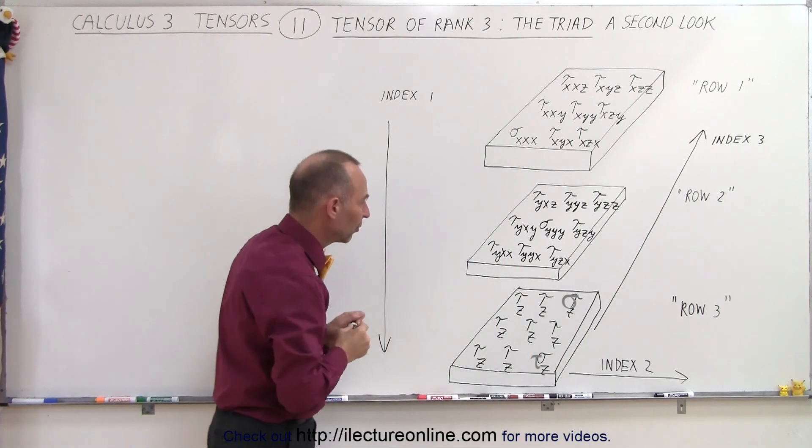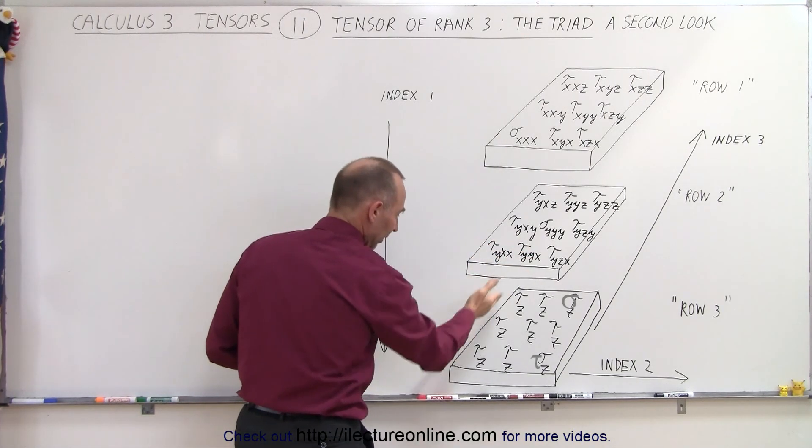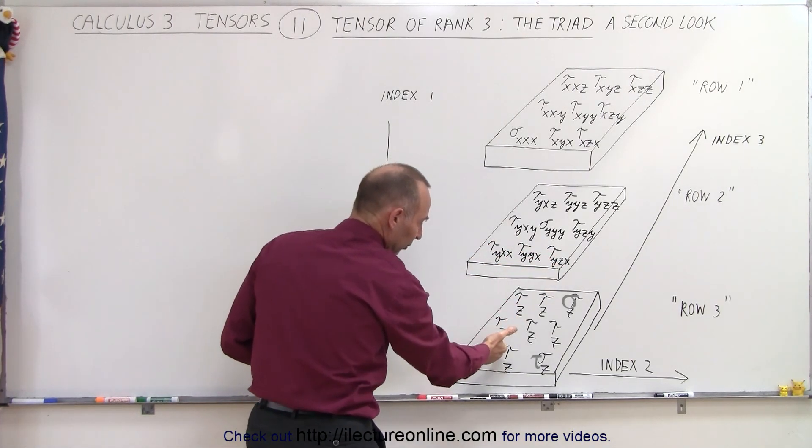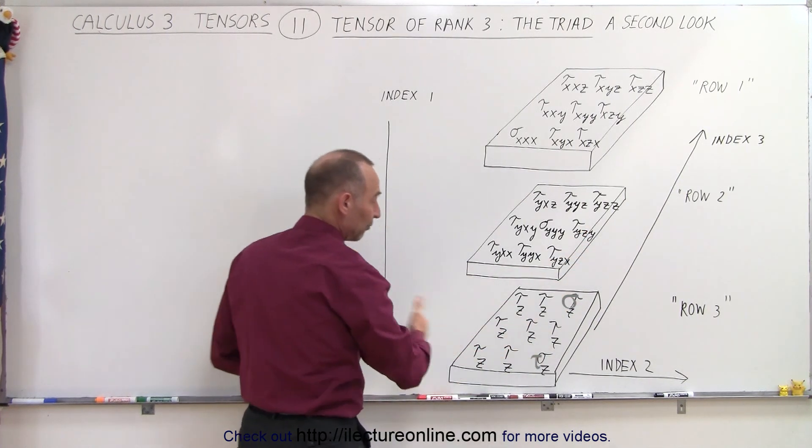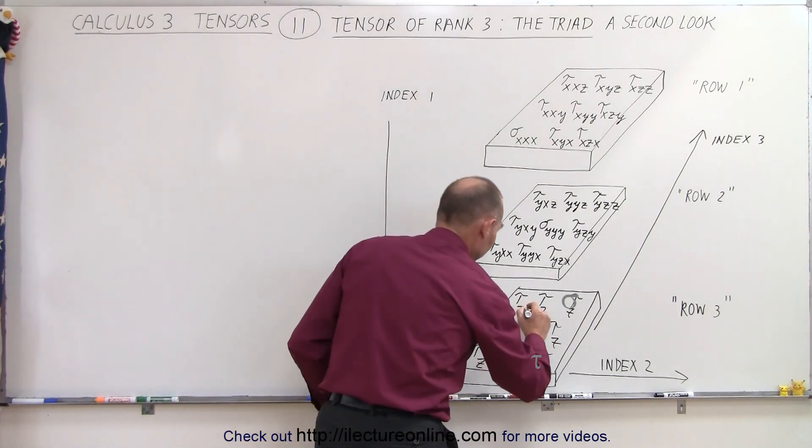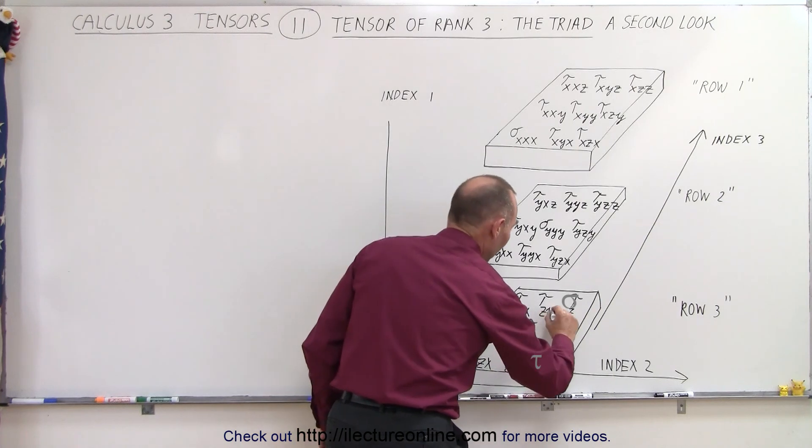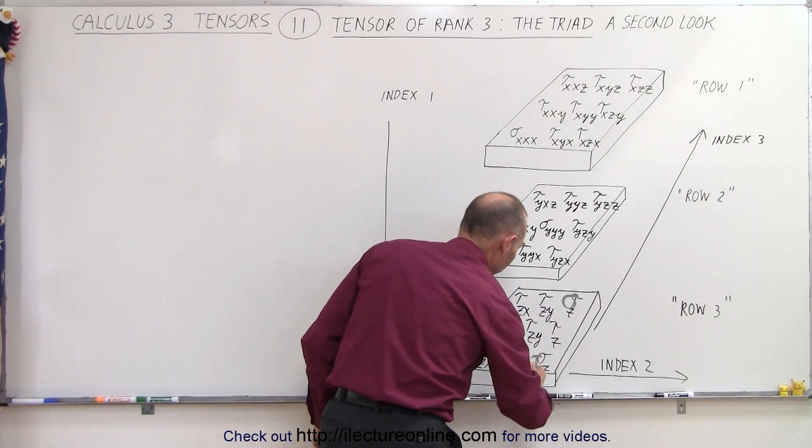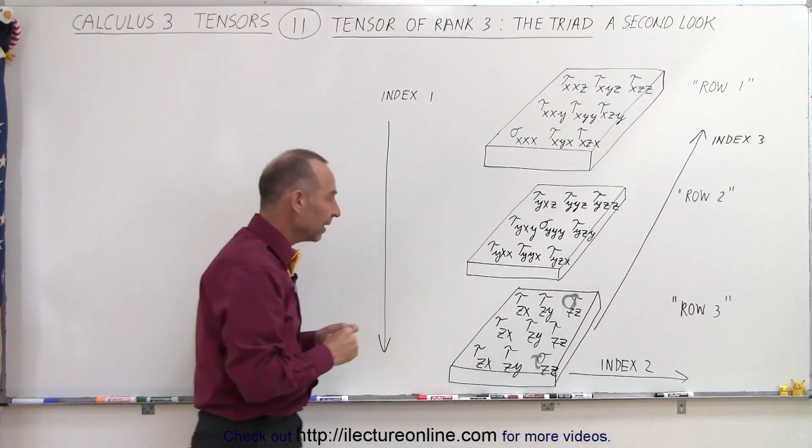Now for the second index, we go from left to right, so the subscript means for the first three on the left they get an x, for the second three in the middle they get a y, for the third three on the right side they get a z. From left to right index 2 representing the columns, so we go x on the first column, we get y on the second column, and we get a z on the third column.